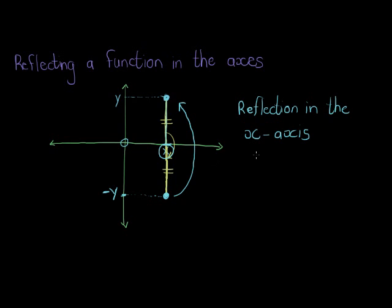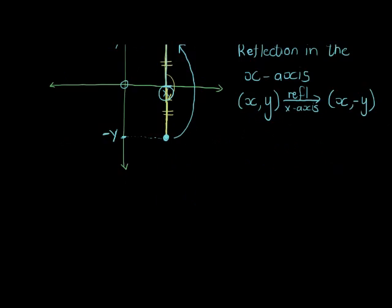Now what that means is that the x-coordinate stays the same, so if I take any point x comma y and I reflect it in the x-axis, that means that the new point, the x-coordinate will stay exactly the same, but what will happen to the y-coordinate? The y-coordinate will become negative y. So what happens if I do this to a function?